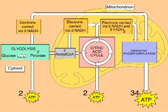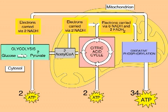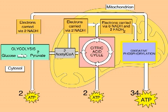Most of the energy harvested from organic molecules during glycolysis and the citric acid cycle is stored in NADH and FADH2. These molecules give up their high-energy electrons in the third phase of cellular respiration, oxidative phosphorylation, where most of the cell's ATP fuel is produced.